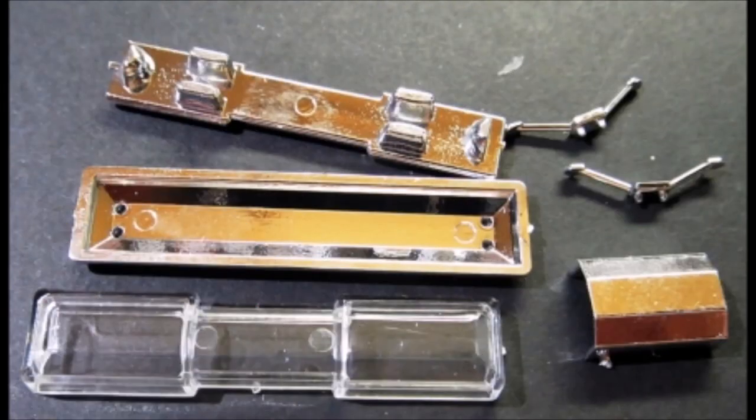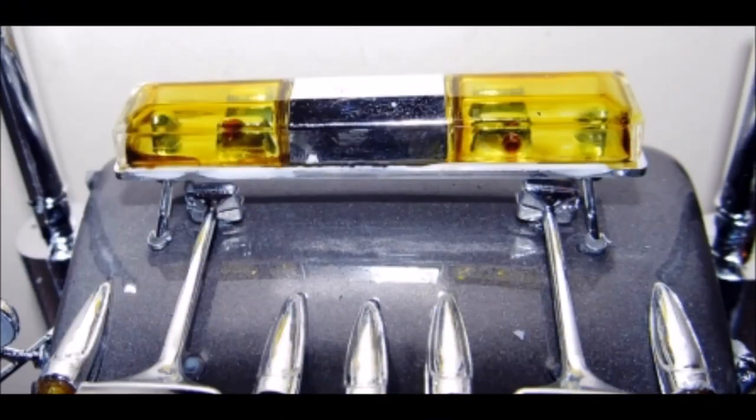Now you can add the optional light bar, paint the lens transparent yellow, assemble the legs to the base, and then add the rotators into the base. Add the lens, and lastly add the center cover. Install this onto the cab roof.